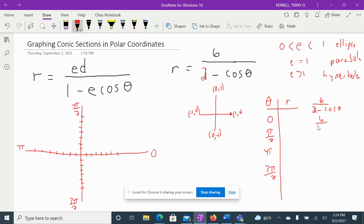I'm going to plug in 6 over 2 minus cosine of, what am I plugging in? 0. Well, cosine of 0 is 1. So really, this is 6 over 2 minus 1. 2 minus 1 is 1. So that's just 6 over 1, which is, that's going to be 6. All right, not too bad, right?